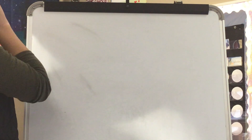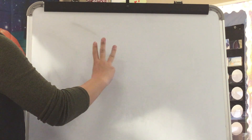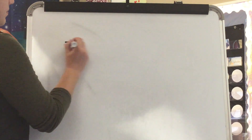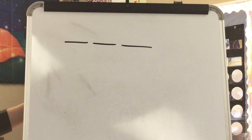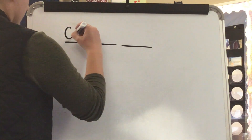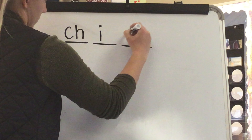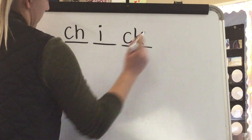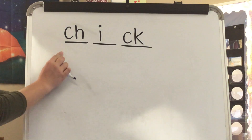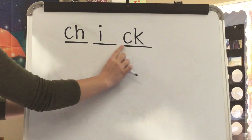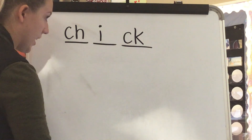Our next word is chick. What word? Chick. Stretch chick. CH-I-C-K. Stretch chick again. CH-I-C-K. Write the sound spellings you hear in chick. Check. Spell chick. C-H-I-C-K. Word. Chick. Yes.